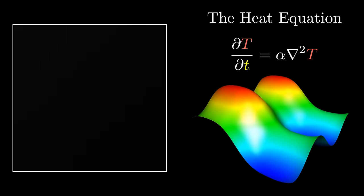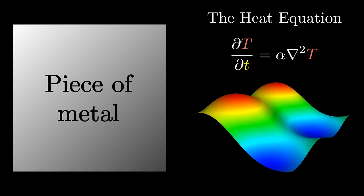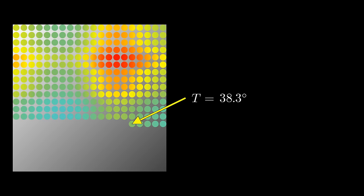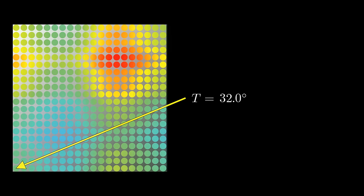To set things up, imagine you have some object, like a piece of metal, and you know how the heat is distributed across it at any one moment. That is, what's the temperature of every individual point along this plate?